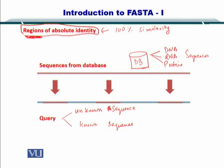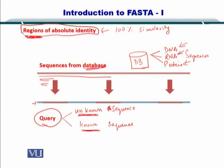To elaborate: in the database you will have several hundreds of thousands of sequences from DNA, RNA, or proteins. With a query sequence in blue — which may be an unknown or known sequence — you can find these regions of 100% similar composition with the database. FASTA finds these regions and employs them in pairwise alignment later.